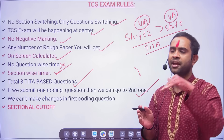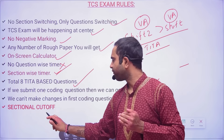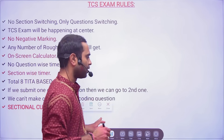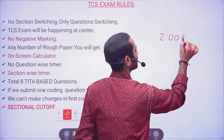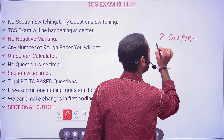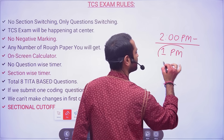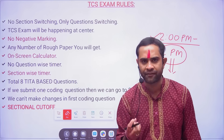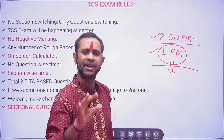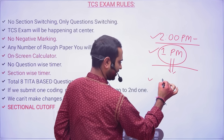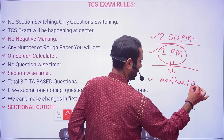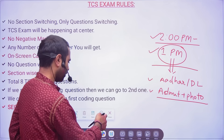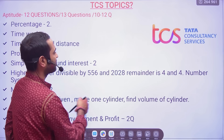If you submit one coding question then you can go to the second coding question, and once you move to the second coding question you cannot go back to the first. Sectional cutoff and overall cutoff both are there. Shift 2 started at 2 PM and you had to be at the center by 1 PM — one hour buffer in case you need to arrange documents or printouts. You needed one original Aadhaar card or DL, and admit card with photo pasted on it.